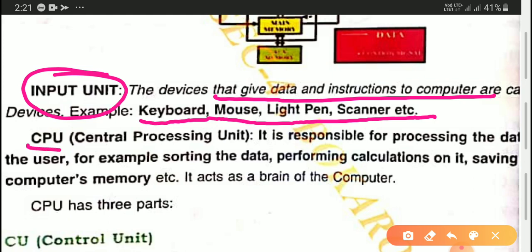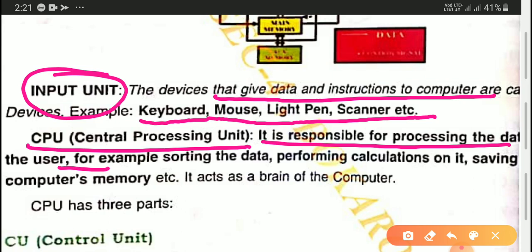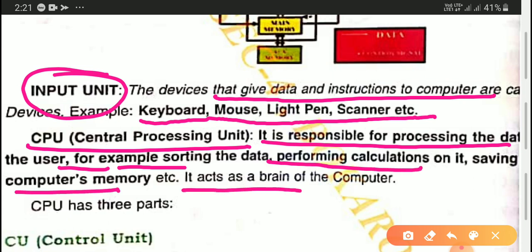The second one is the CPU, that is the central processing unit. It is responsible for processing the data for the users. Just as we discussed with the cake analogy — in the oven, the batter is processed and cooked — in the same manner, in the computer, whenever we give some data to perform any calculations, the processing will be done in the CPU. So the CPU acts as the brain of the computer.